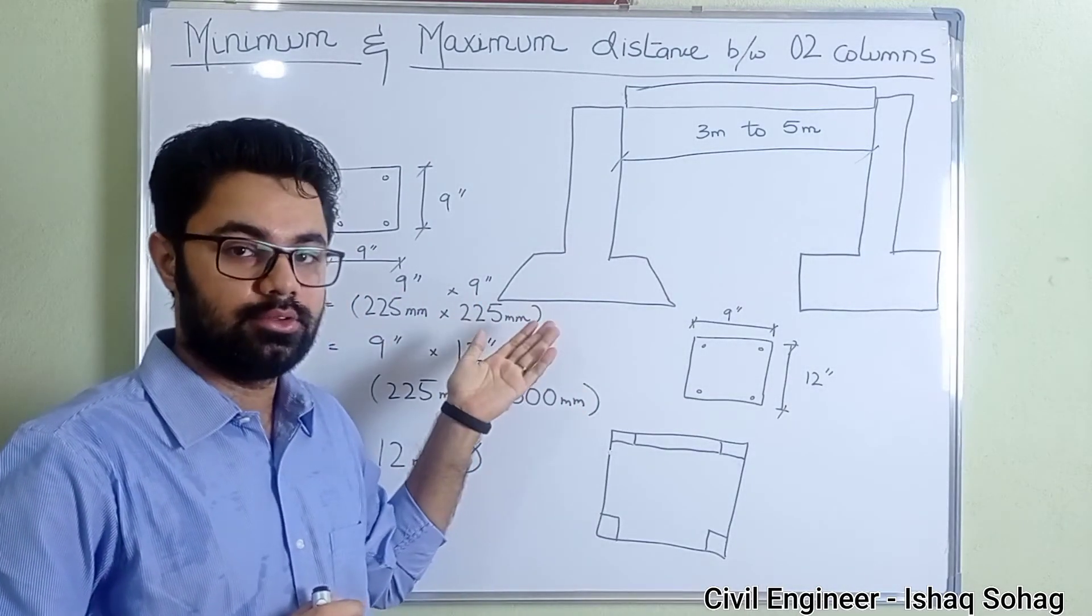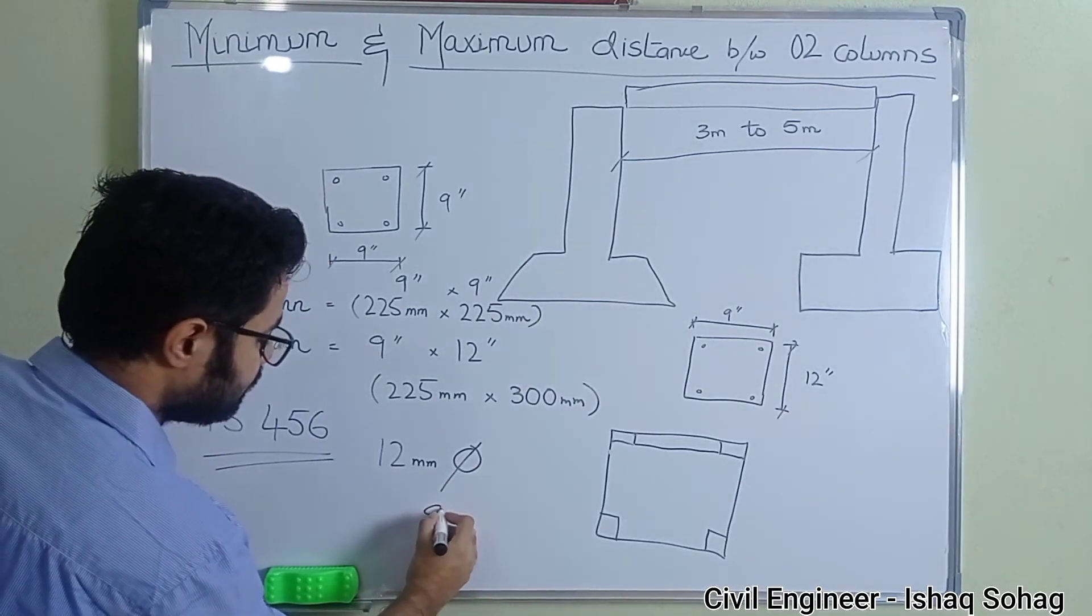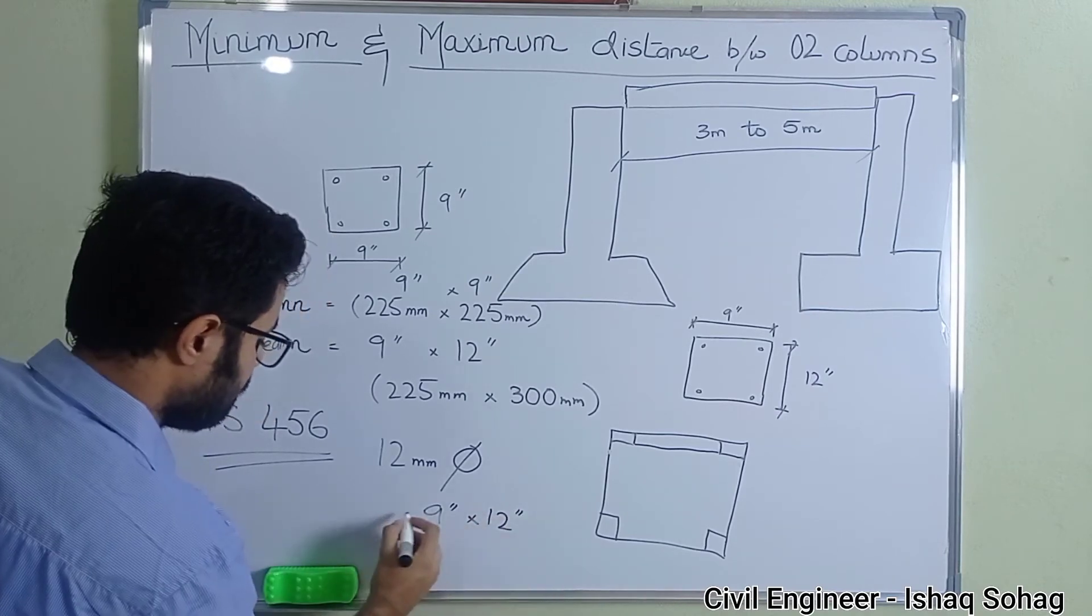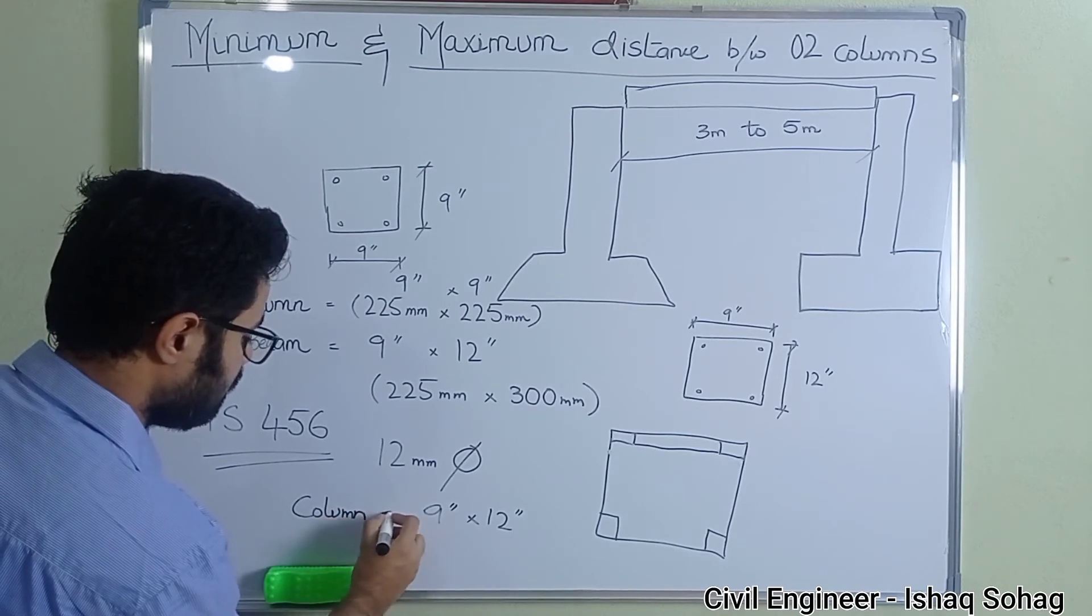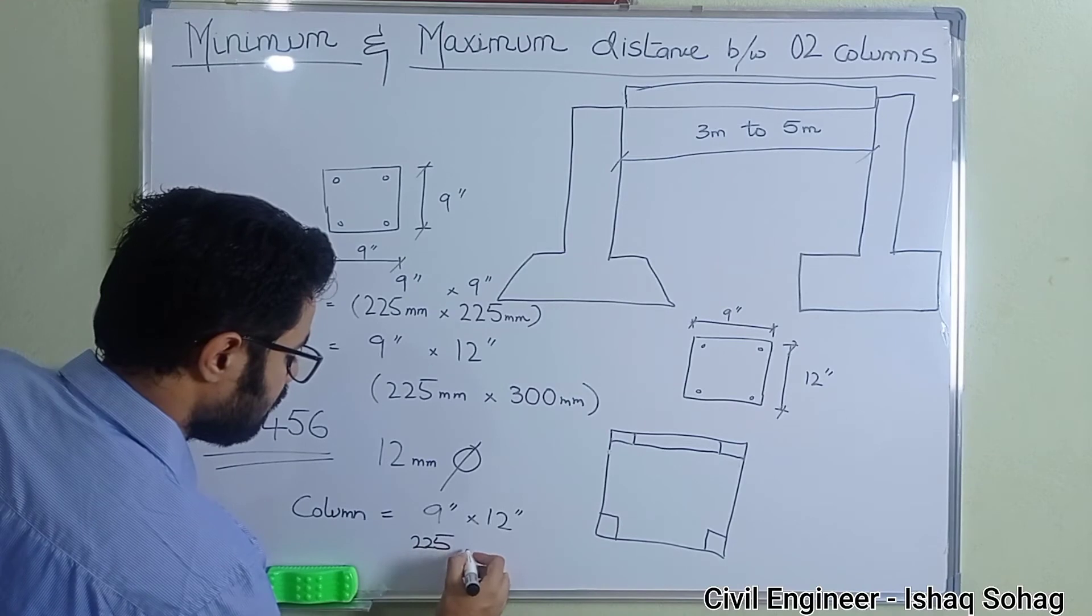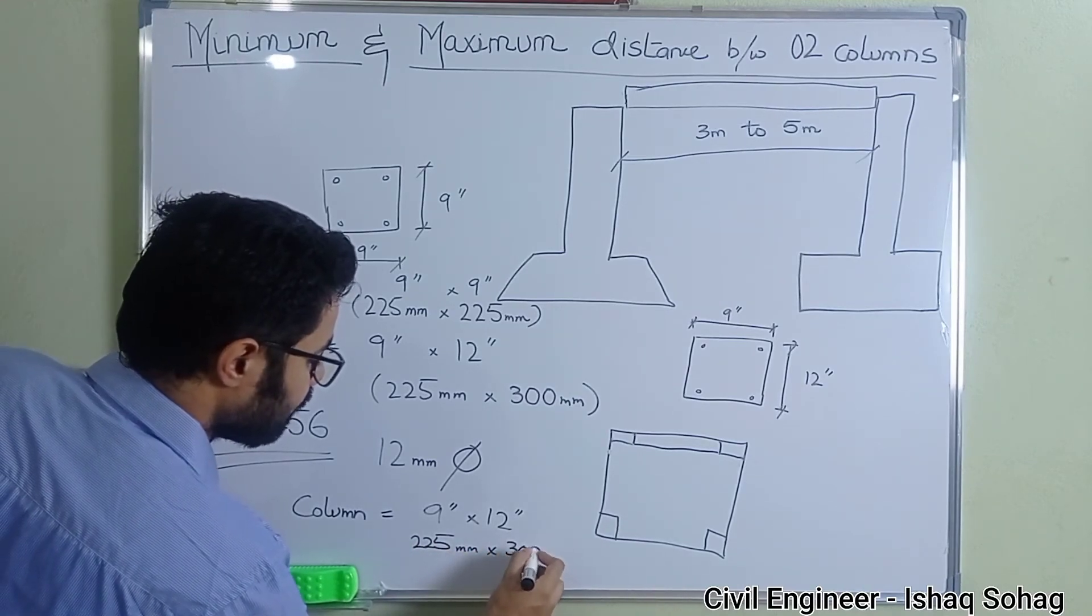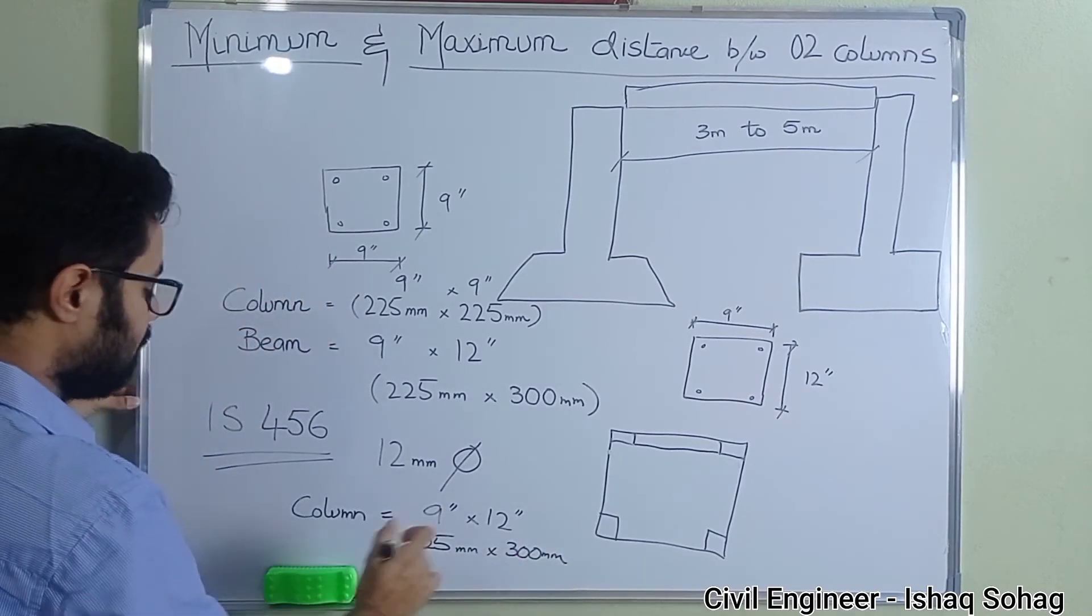Now if you are designing for a structure which is like three stories, then you can use nine inch by 12 inch column, which is 225 millimeter by 300 millimeter. If you are having three stories, so three story structure can have this nine by 12 inches.